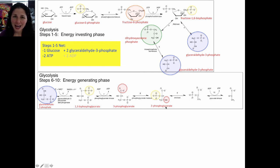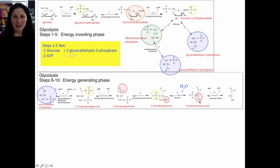2-phosphoglycerate is dehydrated, meaning water is removed. The atoms of this water come from the alcohol group and the hydrogen on the adjacent carbon; their removal creates a double bond between the two carbons. This molecule is called phosphoenolpyruvate, the last intermediate in the glycolysis pathway. The remaining phosphate group is transferred from phosphoenolpyruvate to ADP, making a second molecule of ATP, and the product is pyruvate.